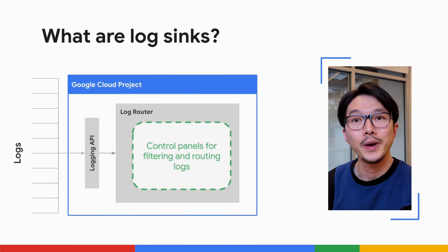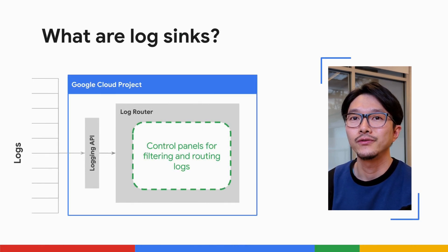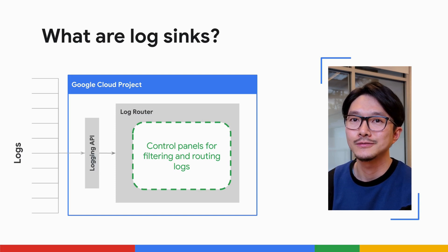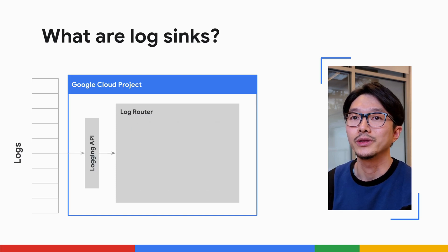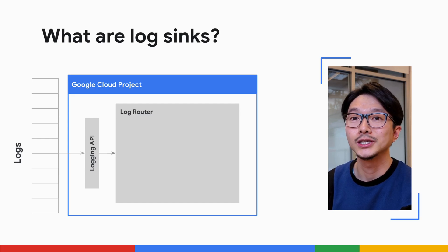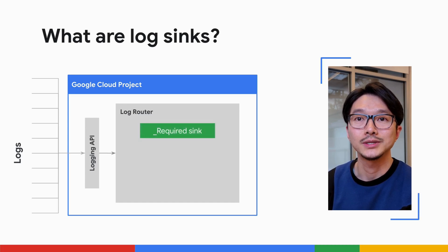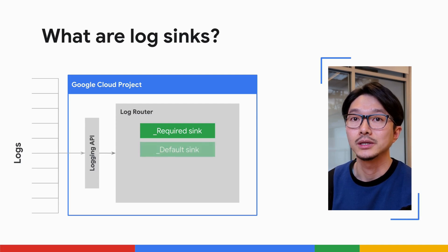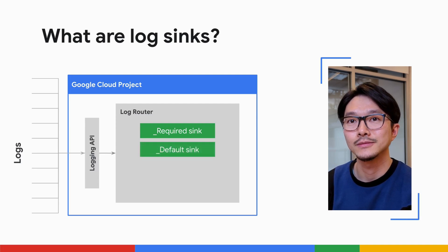Think of log sinks as control panels for your log flow. They let you filter and precisely direct the flow of those logs. By default, there are two log sinks that come with every Google Cloud project. One is called the required log sink, which routes a subset of logs that are free to you. The other is called the default log sink, which routes all the remaining logs.